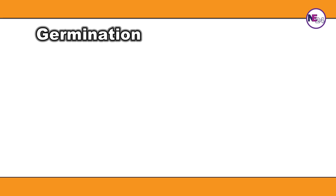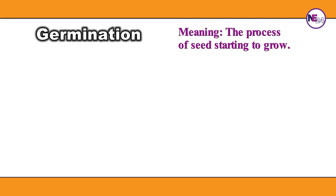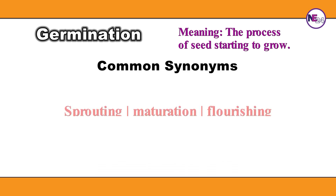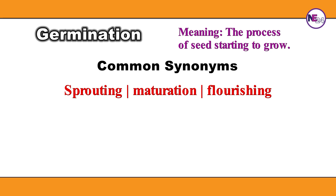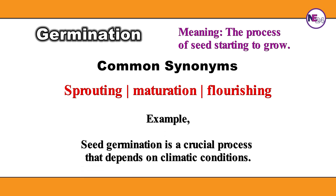Germination: the process of a seed starting to grow. Sprouting, maturation, flourishing. Seed germination is a crucial process that depends on climatic conditions.